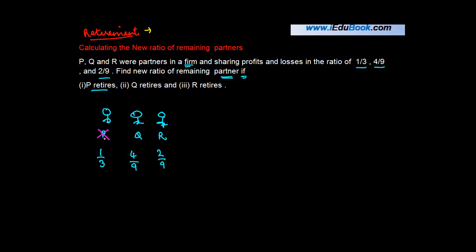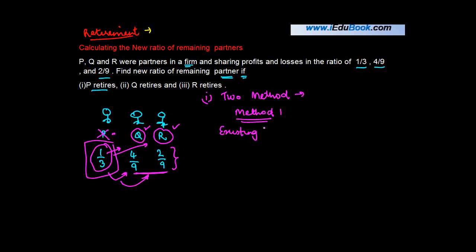What happens is P decides to retire from the firm. Whatever is his share goes and gets distributed amongst the remaining two partners. You are told to find out what is the new profit sharing ratio between Q and R if P retires. There are two methods through which you can do this. These methods are applicable if you are not given what is the ratio in which this money goes to Q and R.